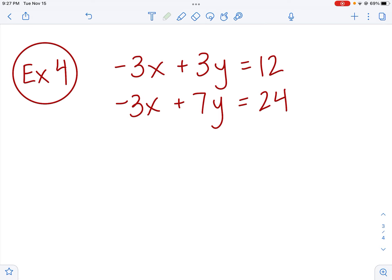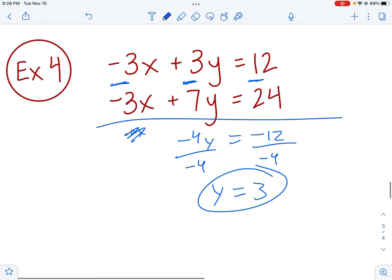What I'd like for you to do is go to example 4. See if you can do the elimination and find out one of your variables. Pause the video. Get it done. Hopefully, you figured out that you want to subtract on these ones. Negative 3 minus negative 3 gives you 0. So we're going to do that. You'll get 0x. 3y minus 7y gives you negative 4y. And then 12 minus 24 gives you negative 12. From here, you're just going to divide by negative 4 to get your y all by itself. And we get 3. Hooray! We got 3. We got half our problem done.